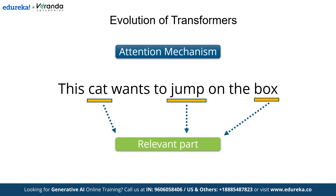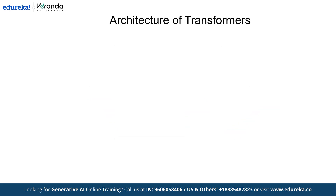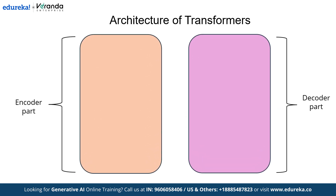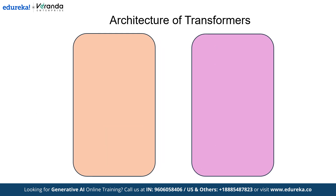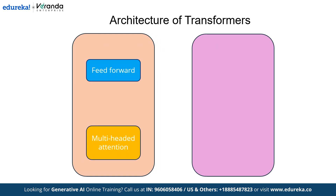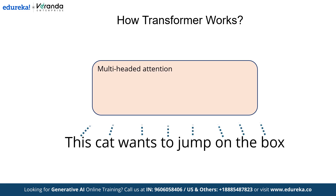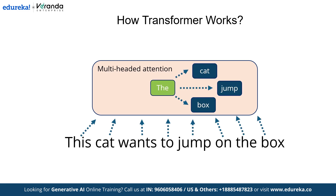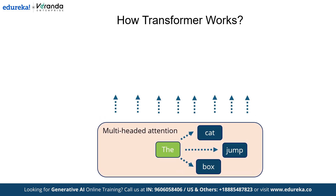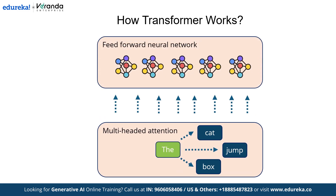Now let's discuss transformer architecture. A transformer consists of two main components — an encoder and a decoder — each typically consisting of six layers. Inside the encoder, there is one attention layer and one feed-forward layer, while the decoder contains two attention layers and one feed-forward layer. The magic of parallelism comes from how data is fed into the network. In the attention layer, all words are processed simultaneously, with each word forming combinations with others in the sentence. This allows the model to capture relationships and context efficiently. After processing in the attention layer, the data is sent to the feed-forward layer, where it is learned layer by layer.